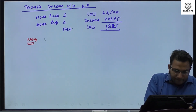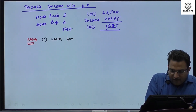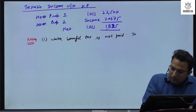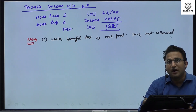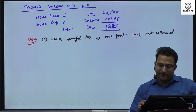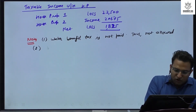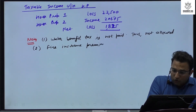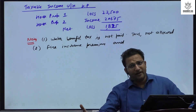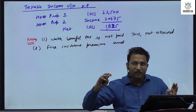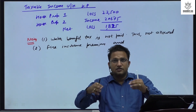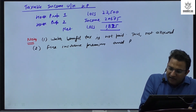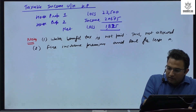Note 1: Water benefit tax is not paid, thus not allowed. If it had been paid, it would be treated as part of municipal taxes and allowed on a paid basis. Note 2: Fire insurance premium and rent on lease are not allowed deductions under house property. The land on which the house is constructed may be on lease from an authority, but that rent is not permitted.